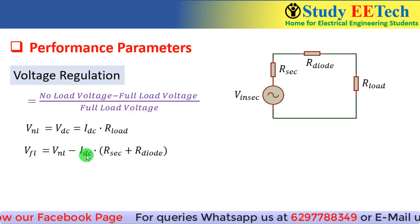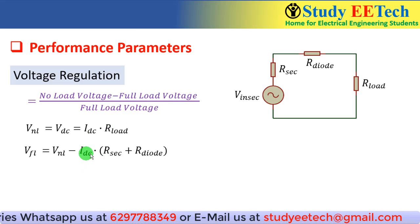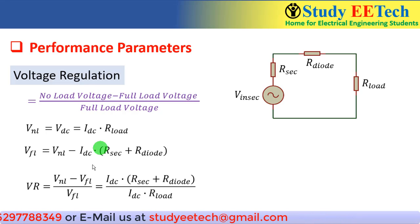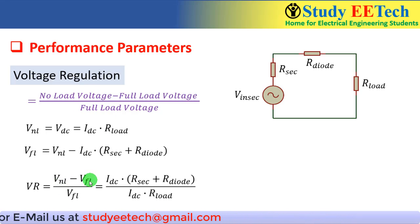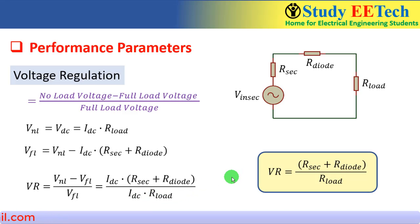The full load voltage keeps changing as the I_DC value changes. Putting all these into the voltage regulation expression, V_no_load − V_full_load / V_full_load simplifies to I_DC × (R_secondary + R_diode) / (I_DC × R_load), giving: voltage regulation = (R_secondary + R_diode) / R_load.